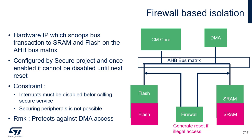Firewall also has some constraints. First of all, interrupts must be disabled by the non-secure application before calling the legal API, before opening the firewall. The second constraint is that it's not possible to protect or isolate peripherals — firewall only creates regions in flash or SRAM.